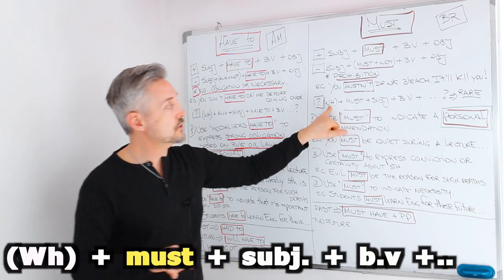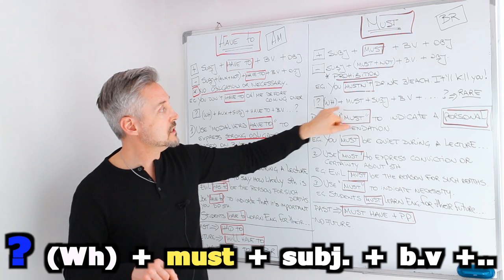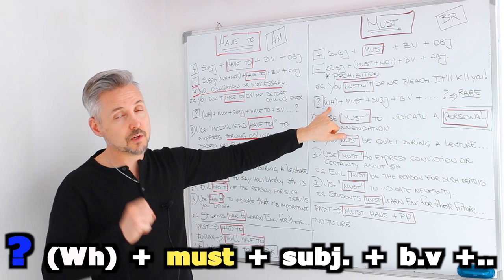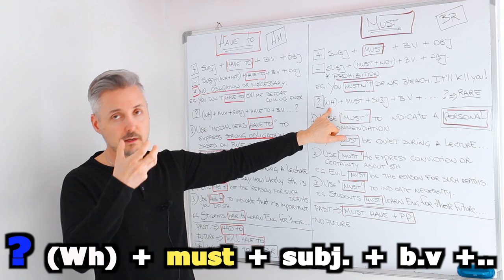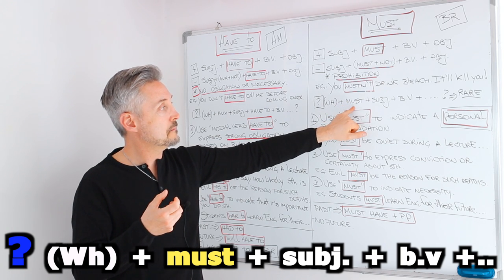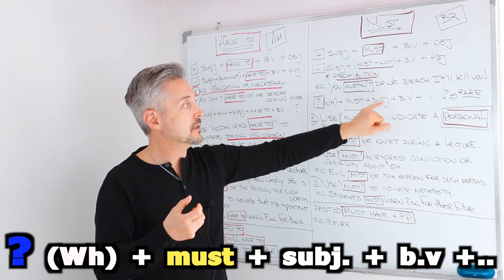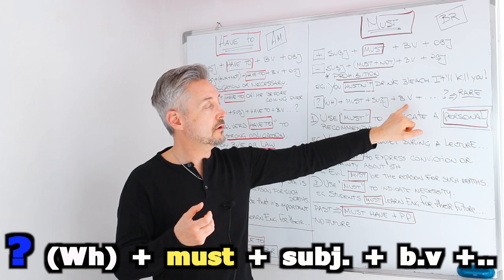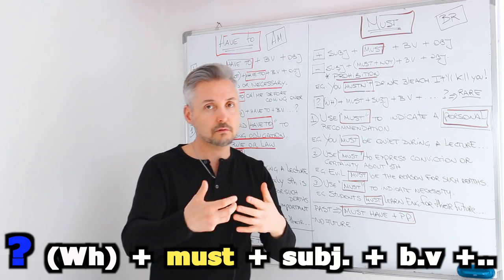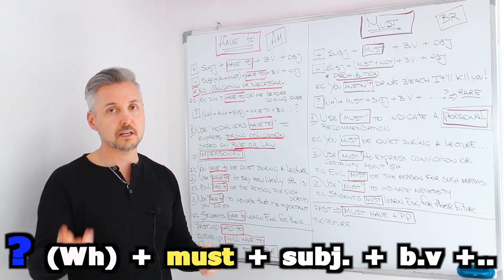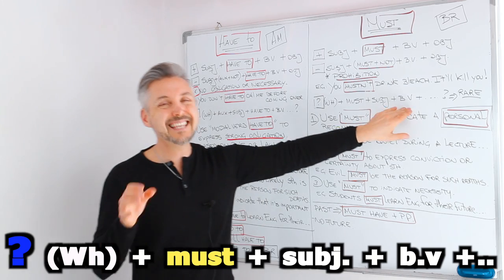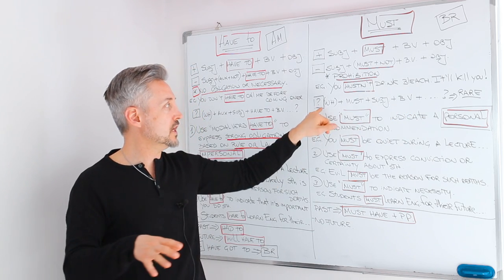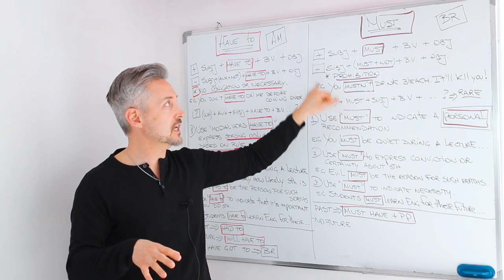For an interrogative sentence with must, you have to use a WH question word if you have one, then must, then the subject, then the base of the verb, and then the time expression or object, if any. This is very, very rare — we usually don't use must in a question.